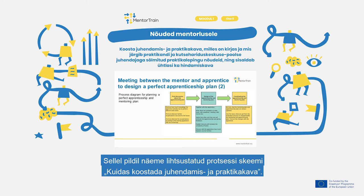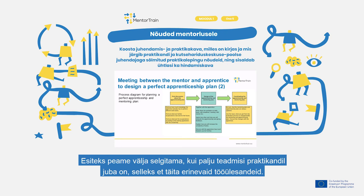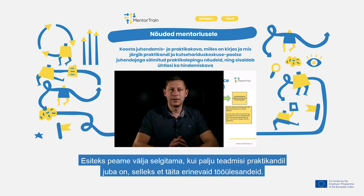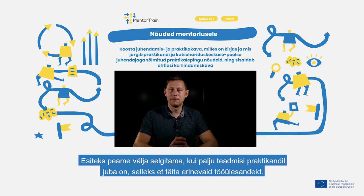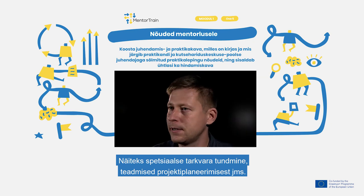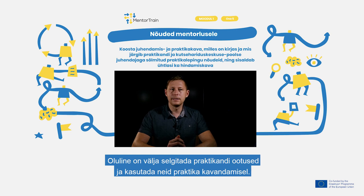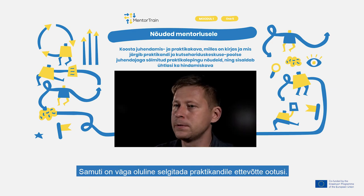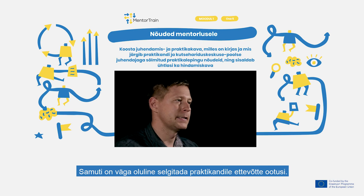On this picture we see a simplified process diagram of how to design a mentoring and apprenticeship plan. Firstly, we must find out how much knowledge the apprentice already has to perform different work tasks, like knowledge about special software, planning projects, etc. It's important to find out the expectations of the apprentice and use that for planning the apprenticeship. And it's very important to explain the expectations of the company to the apprentice too.